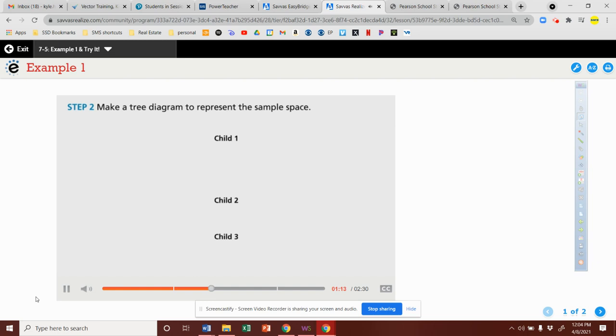Our next step is to make a tree diagram to represent the sample space. The diagram begins with Child 1, who is either a boy or a girl. That's two outcomes so far.